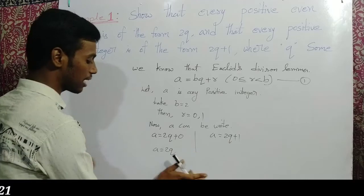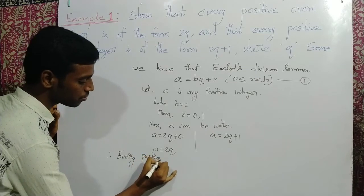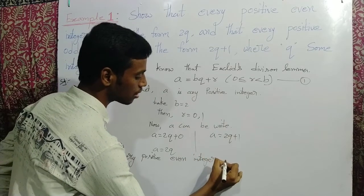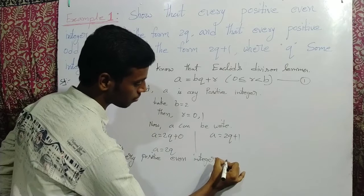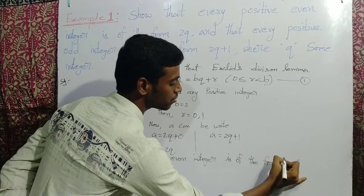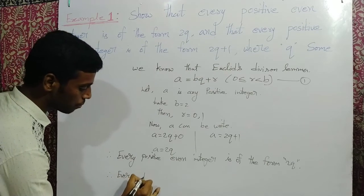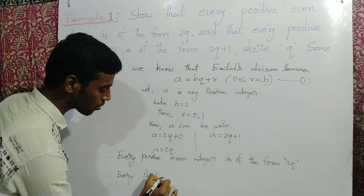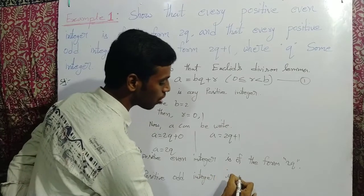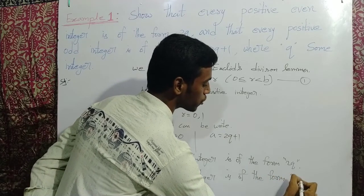Therefore, every positive even integer is of the form 2q. Therefore, every positive odd integer is of the form 2q plus 1.